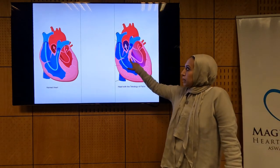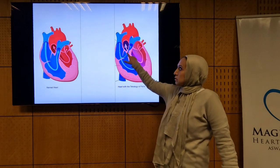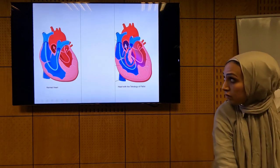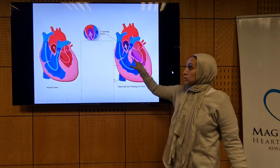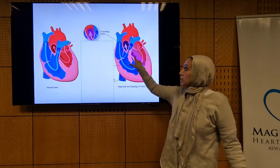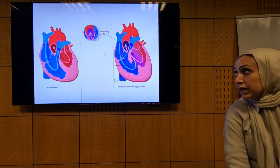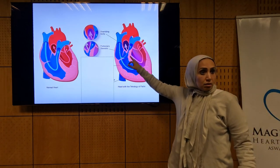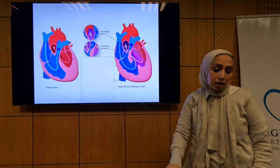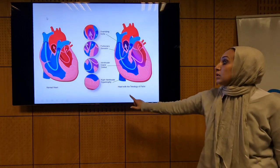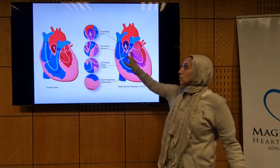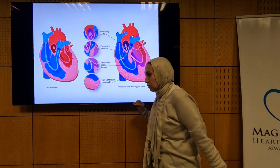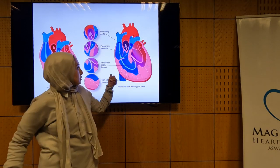The conal septum is deviated anteriorly, causing stenosis in the RVOT. We have overriding of the aorta — the aorta now overrides both the left and right ventricles. We have pulmonary stenosis from this sub-pulmonic conal septum producing obstruction, and sequentially right ventricular hypertrophy. The pathognomonic feature is the anterior-cephalic deviation of the conal septum.